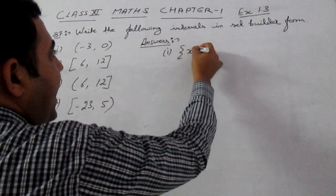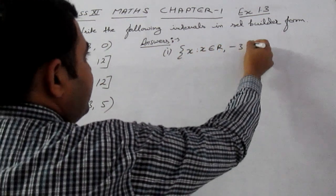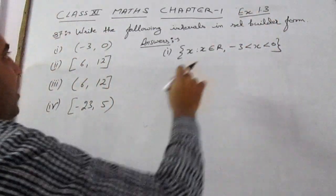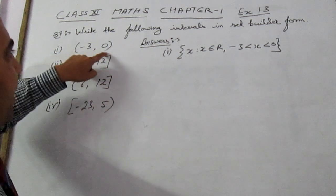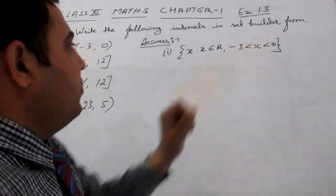So first part: x is such that x belongs to R and -3 is less than x is less than 0. As we can see that small bracket is used both sides, so we will also use less than sign, not equal to with it.